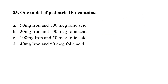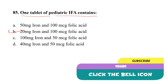Question number 85. One tablet of pediatric IFA (iron folic acid) contains: Option A, 50 mg iron and 100 micrograms folic acid; Option B, 20 mg iron and 100 micrograms folic acid; Option C, 100 mg iron and 50 micrograms folic acid; Option D, 40 mg iron and 50 micrograms folic acid. The correct option is B — each tablet contains 20 mg of iron and 100 micrograms of folic acid.